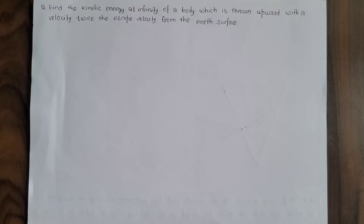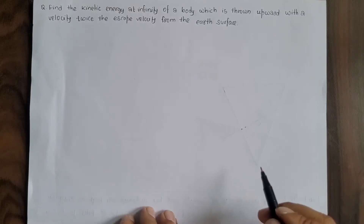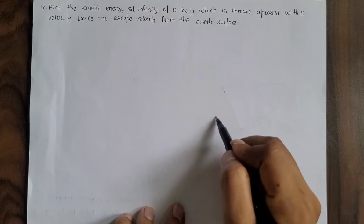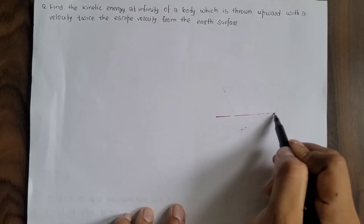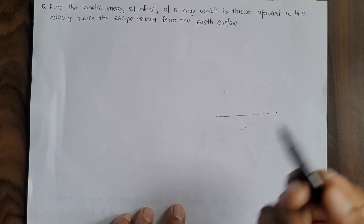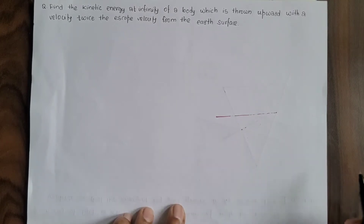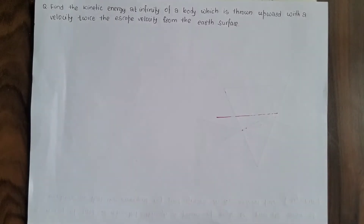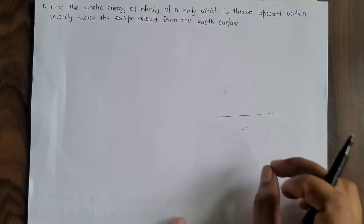Hello students. This question is from class 11 physics, Gravitation chapter. The question asks: if an object is thrown from the ground with twice the escape velocity, find the kinetic energy of the object at infinity.